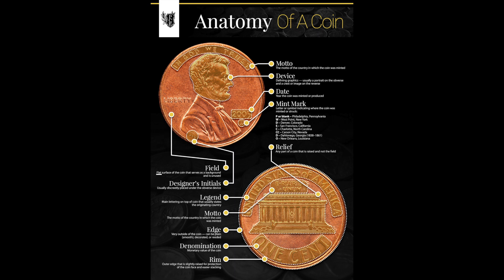The edge of the coin is the very outside of the coin — it's actually known as the third side. So you have the front, the back, and then the edge of the coin. Not to be confused with the rim, which is the outer edge that's slightly raised for protection of the coin and is on the front and back of the coin as opposed to the edge. Obverse and reverse simply means the front and back of a coin — obverse is the head side or front, and reverse is the tail side or back.